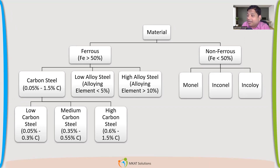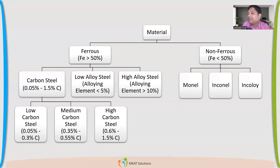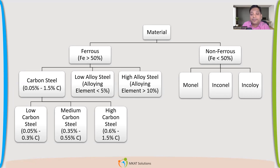Why don't we use medium or high carbon steel in the pressure vessel industry? Because of weldability issues. Medium and high carbon steels are difficult to weld — they become brittle and very hard when welded, causing cracks. Those cracks mean the material cannot sustain any pressure. So we only use low carbon steel in the pressure vessel industry.